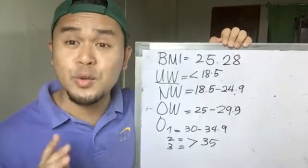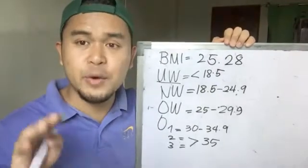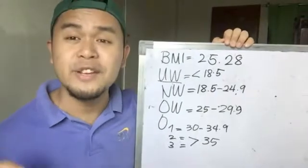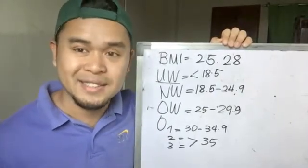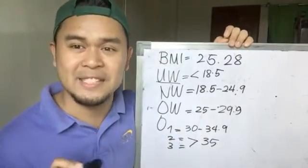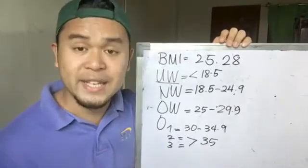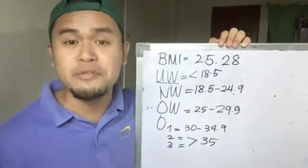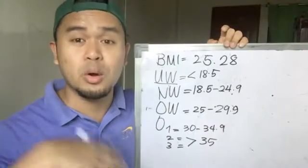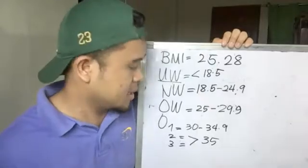Normal weight is a BMI of 18.5 to 24.9 — take note of the decimal points, they are very important. This range of 18.5 to 24.9 is the standard normal BMI recognized all over the world.